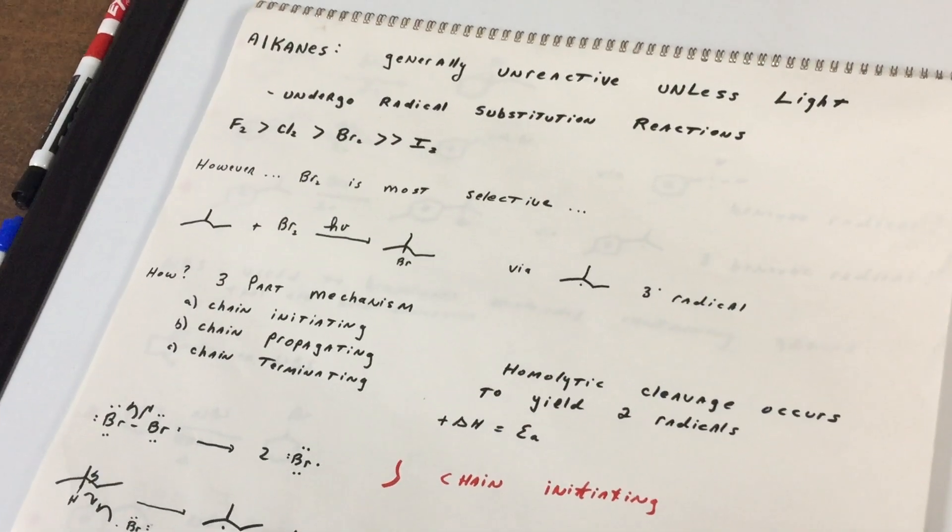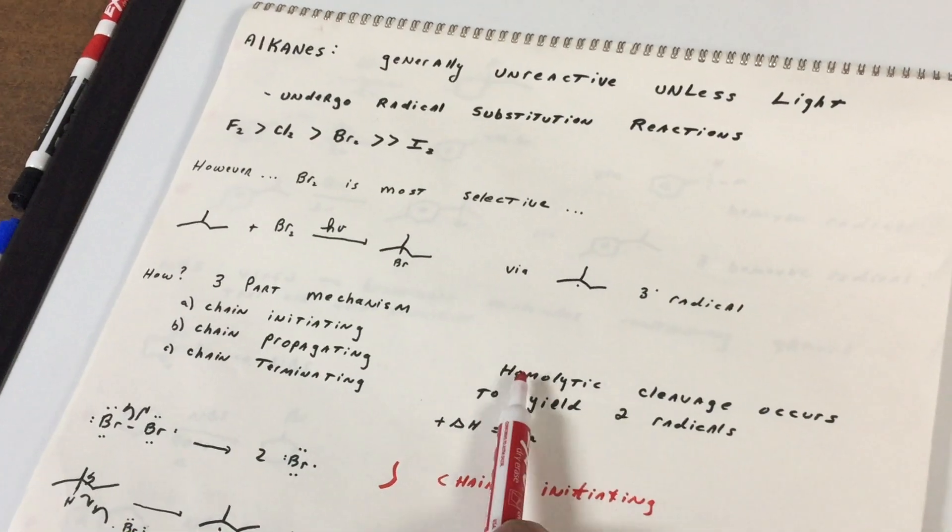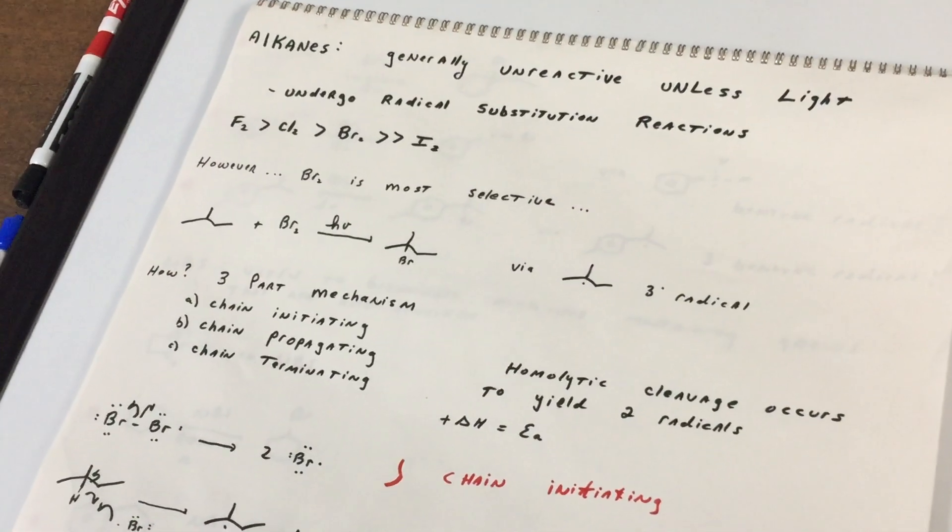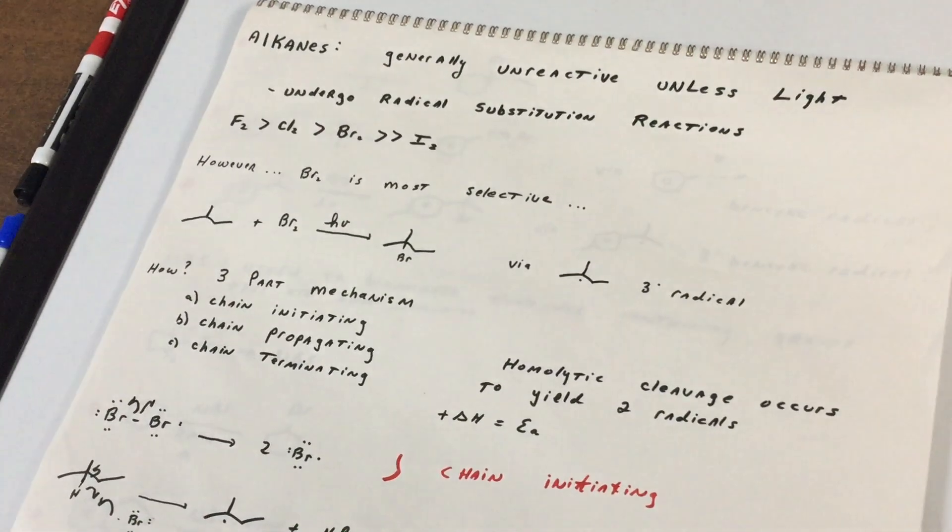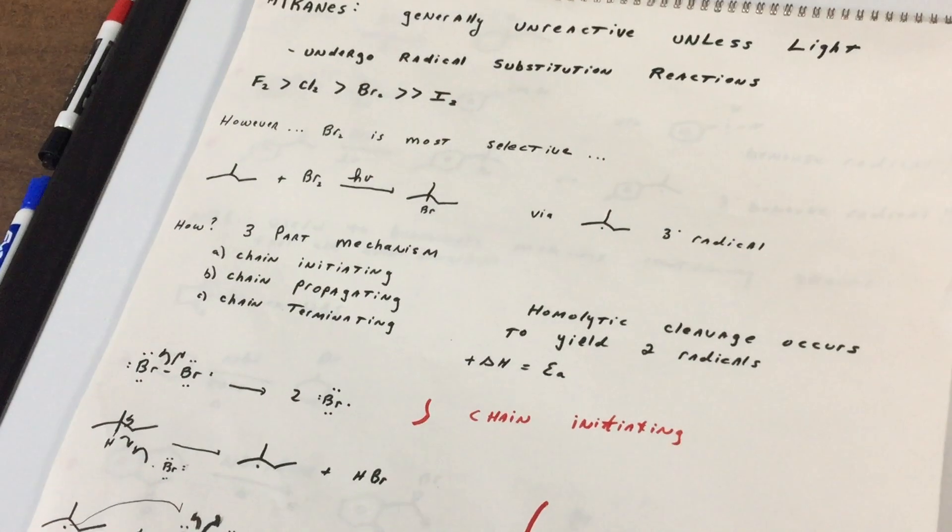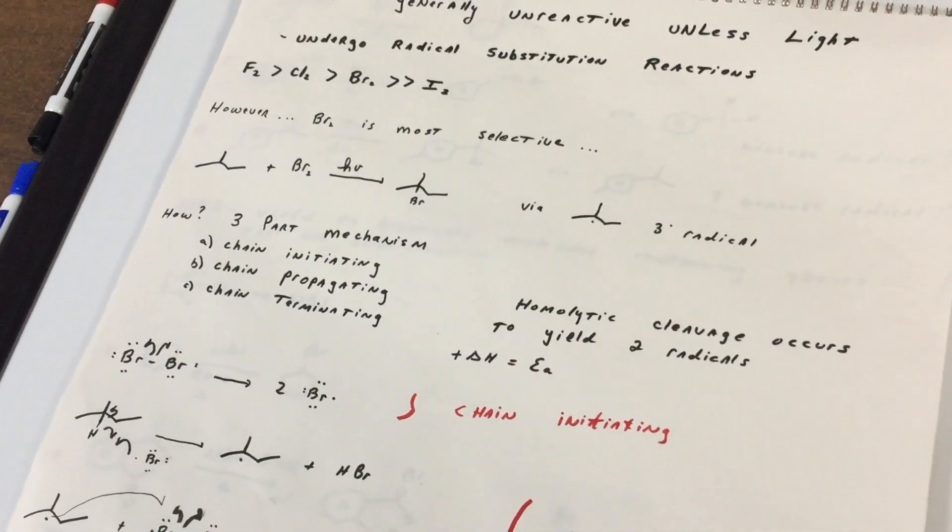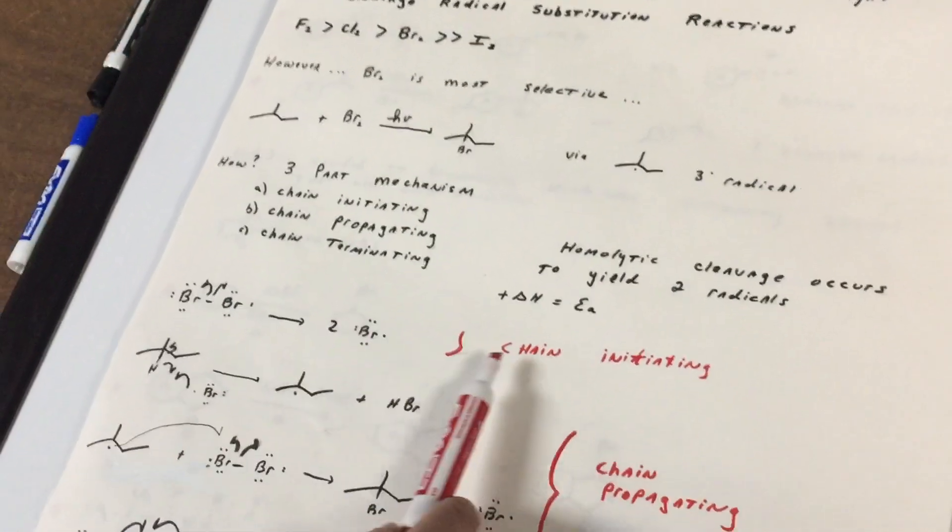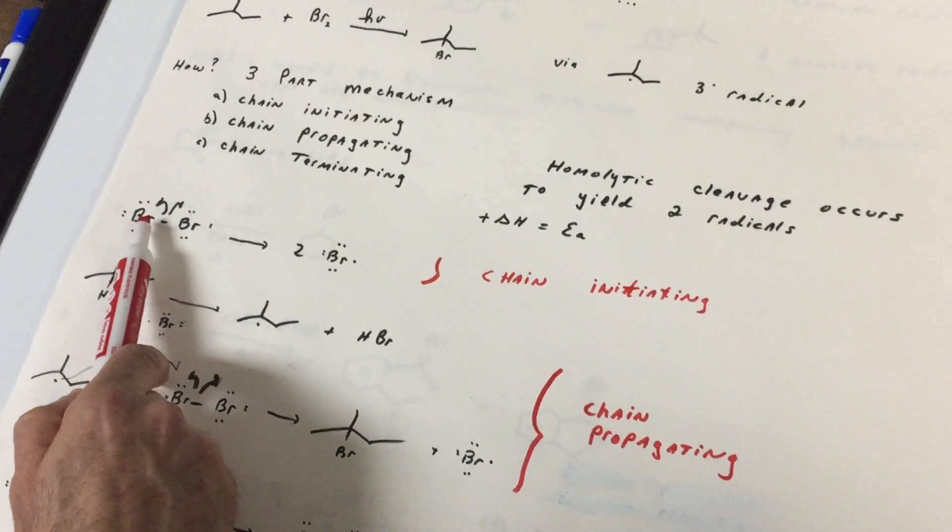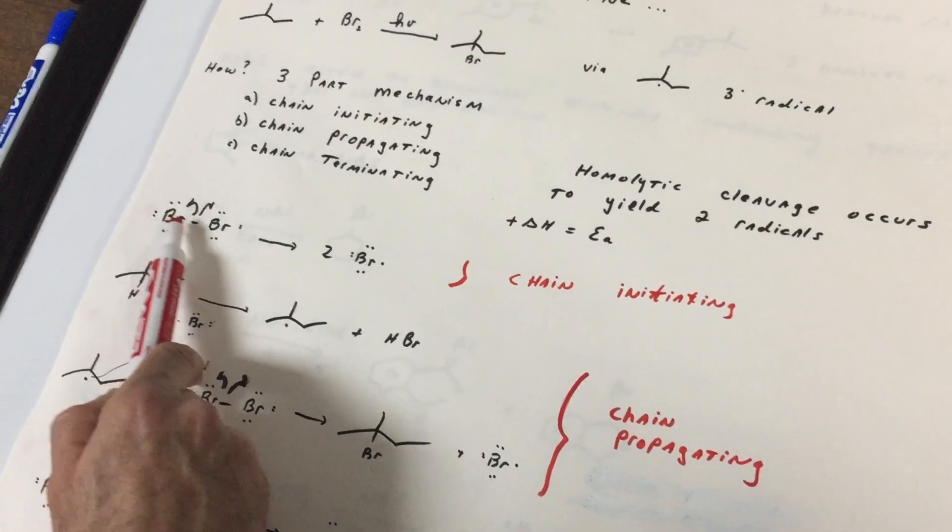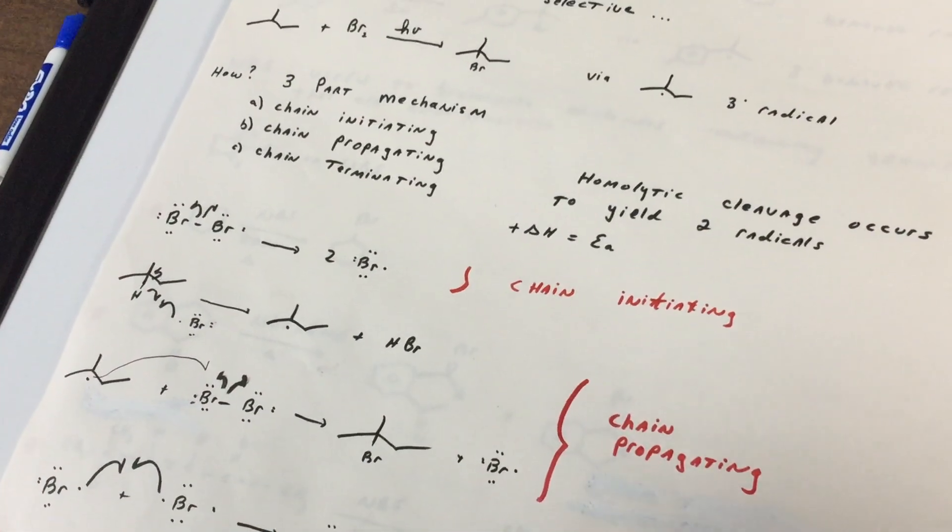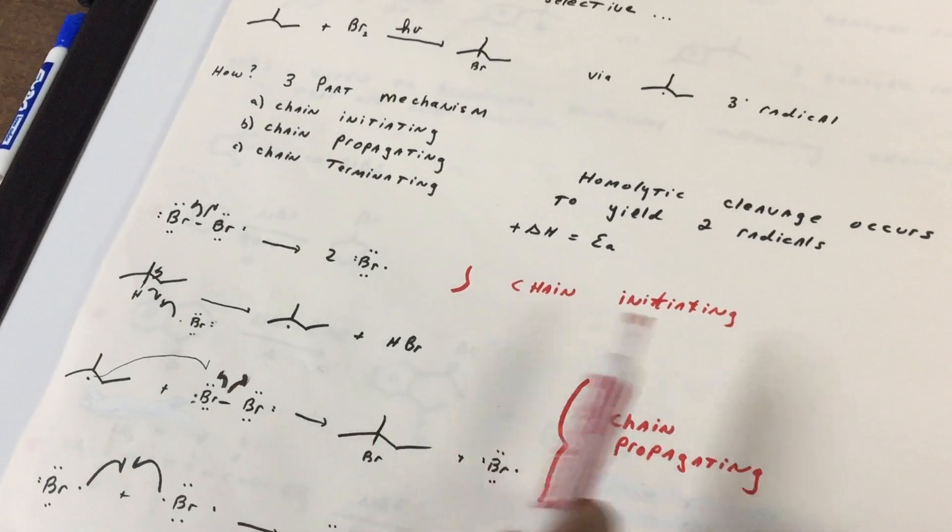Whenever we break a molecule into radicals, they undergo what we call a homolytic cleavage, and that's going to give two new radicals. That first step, which is always a question on the DAT, you want to make sure is the most endothermic of all the steps. And the energy you put in is actually equal to the energy of activation. And as you can see from this first reaction, which is the chain initiating step, we're going to use light and we're going to break this bond. Notice one electron goes here and one electron goes here. I use half arrows to show that we get two bromine radicals. That's the chain initiating step.